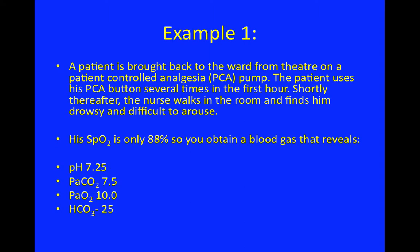Example one: a patient has been to theatre and placed on a PCA pump for pain relief. They've come back to the ward, used it slightly too much, and are now showing respiratory depression and are difficult to arouse. The SpO2 is only 88%. An ABG has been done. Putting this into the clinical scenario, you can almost predict what may occur — though you shouldn't close your eyes to other potential diagnoses. This is a blood gas of a patient you'd expect to have some form of opiate overdose given the clinical history.